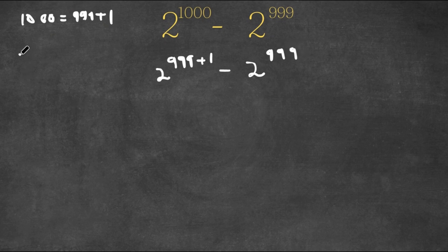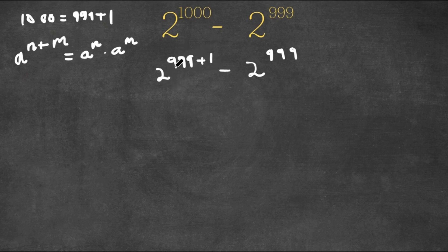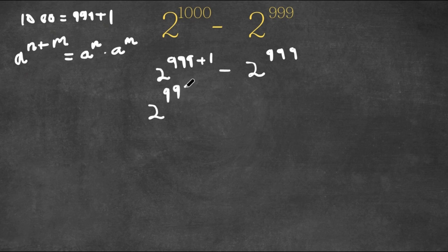Now if we have something in the form A to the power of N plus M, this is equal to A to the power of N times A to the power of M. So in this case, we have 2 to the power of 999 plus 1. Think of 2 as A, 999 as N, and 1 as M. So this would be 2 to the power of 999 times 2 to the power of 1, minus 2 to the power of 999.